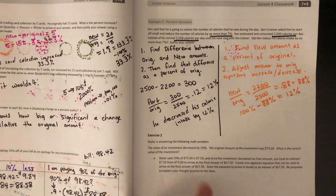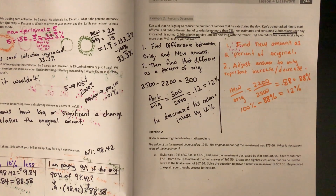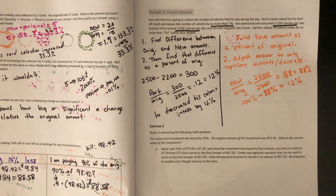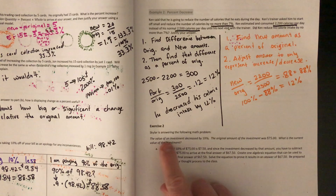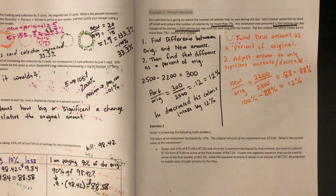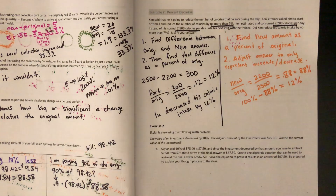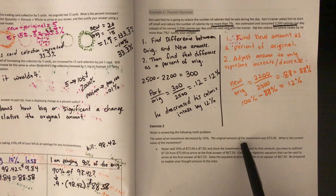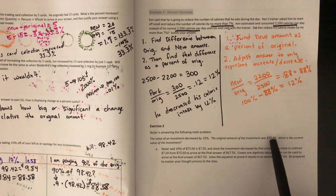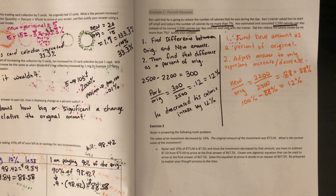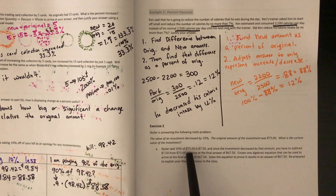Skyler is answering the following math problem — a math problem about someone doing a math problem. The value of an investment decreased by 10 percent, kind of like what's going on with the stock market right now. The original amount of the investment was $75. What is the current value of the investment? Skyler said 10 percent of $75 is $7.50 — she's correct about that.